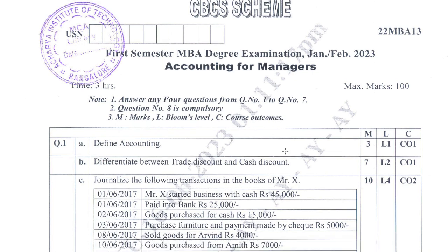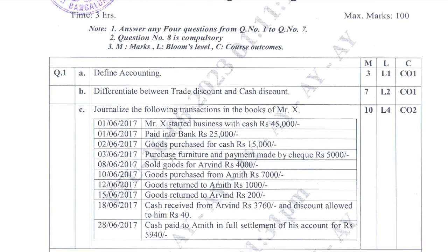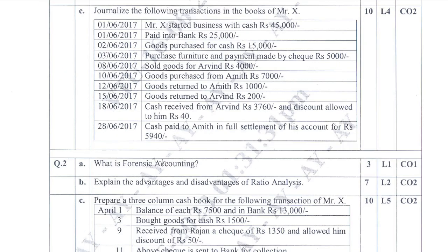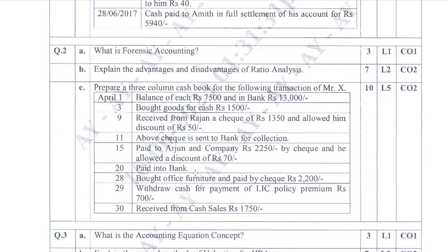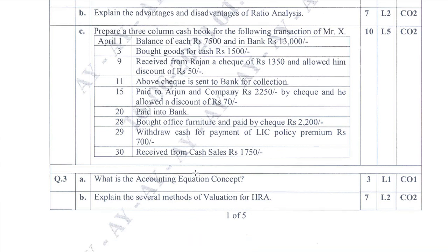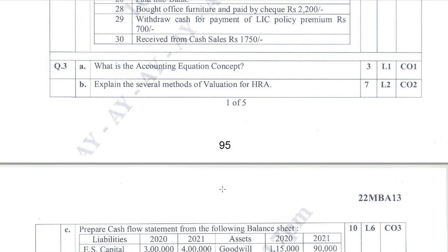It is a combination of all 6 units. Unit 1 covers the first question, B is also a unit 1 question, and journal entry is from unit 2. Forensic accounting is unit 6, ratio analysis is unit 4, cash book is from unit 3, and accounting equation — asset equals liability plus equity — is also covered. HRA methods and valuation are from unit 6.